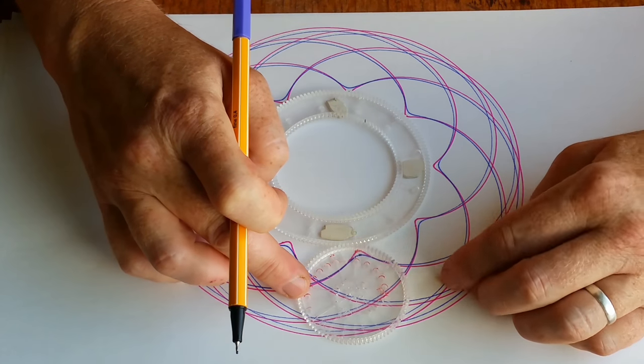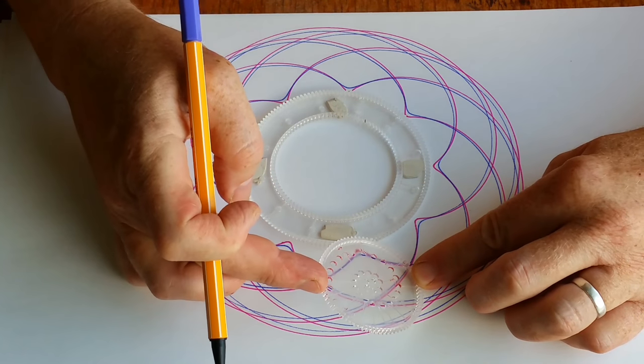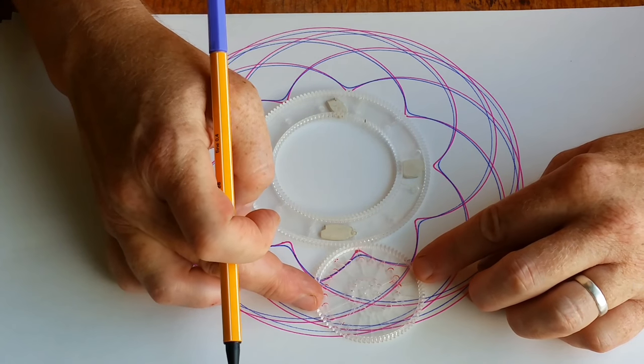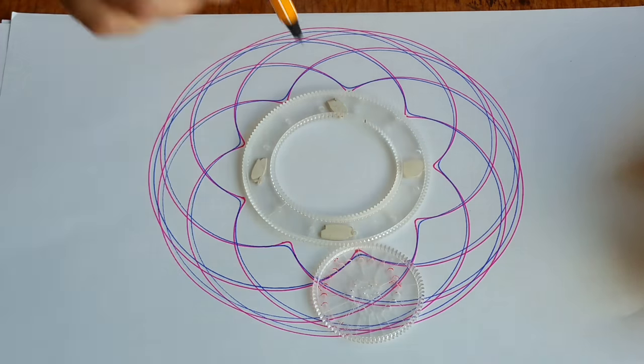Now I'll just do one more. I'll line up hole number nine, I guess that's hole number nine, with the same mark on the ring and use a different color, purple.